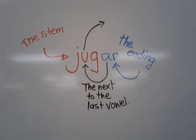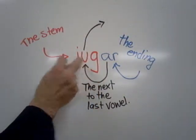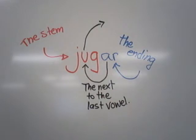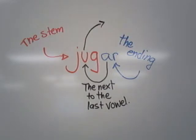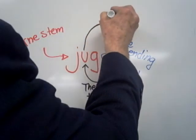However, in a stem-changing verb, the stem also changes a little bit. And it's always the next to the last vowel — here is the last vowel, we go to the next to the last vowel. In stem-changing verbs, that's always the one that changes. And with jugar, the U changes to UE.